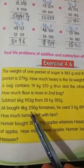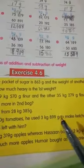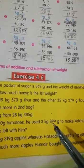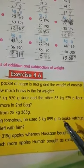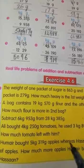Ali bought 4 kg 250 gram tomato. He used 3 kg 899 gram to make ketchup. How much tomato left with him?